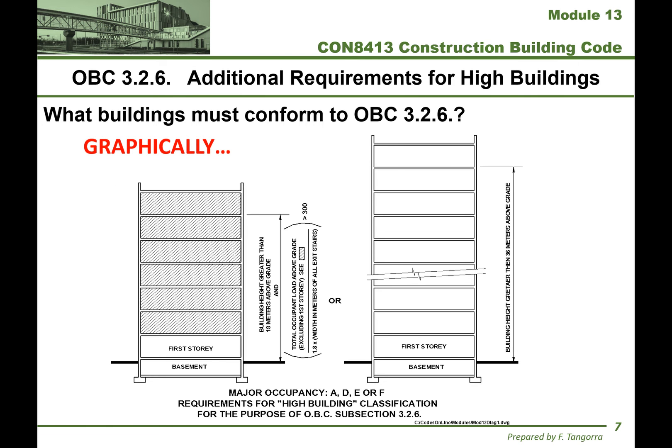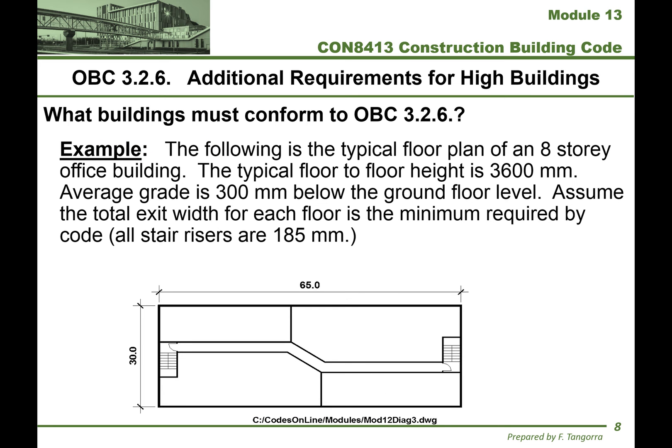Graphically, these requirements are illustrated in an image reproduced on page one of the course notes, so make sure you're familiar with that graphical representation. Notice how the height is shown going from the grade outside to the top floor level of the top story, not to the top of the building. Here's an example, visible on page two of your course notes. The following is a typical floor plan for an eight-story office building. The typical floor-to-floor height is 3,600 millimeters or 3.6 meters.